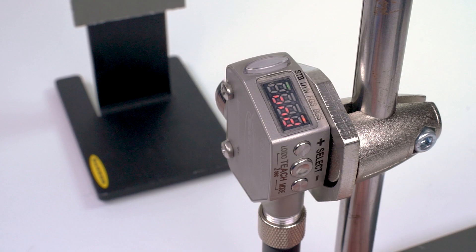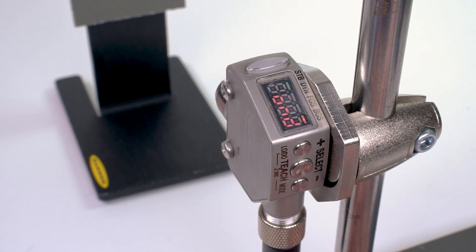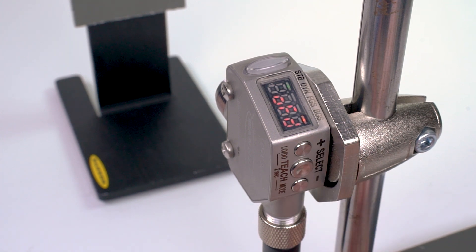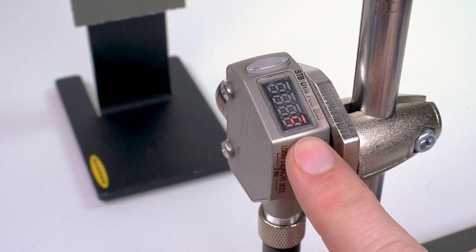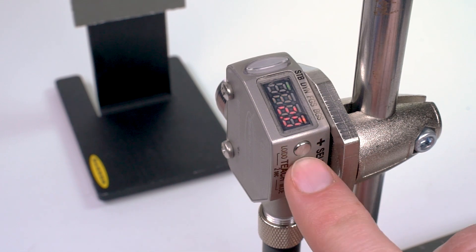The process for enabling an off-delay is similar to that of the on-delay, except that you will select the OFD option in the setup mode menu instead of OND. Use the plus and minus buttons to set the off-delay length and follow the same steps to return to run mode.